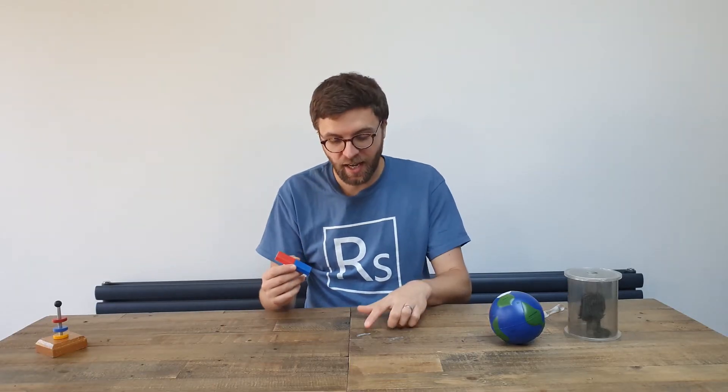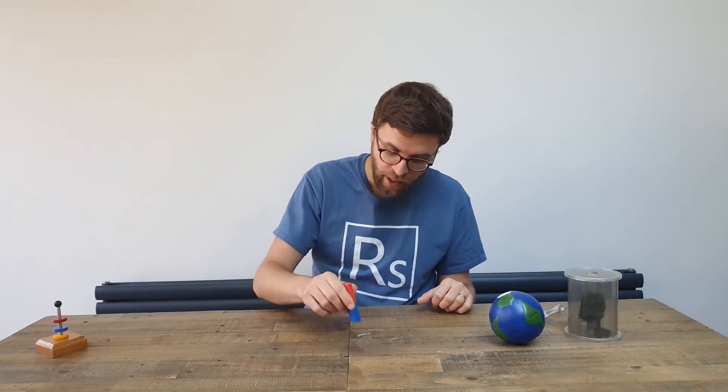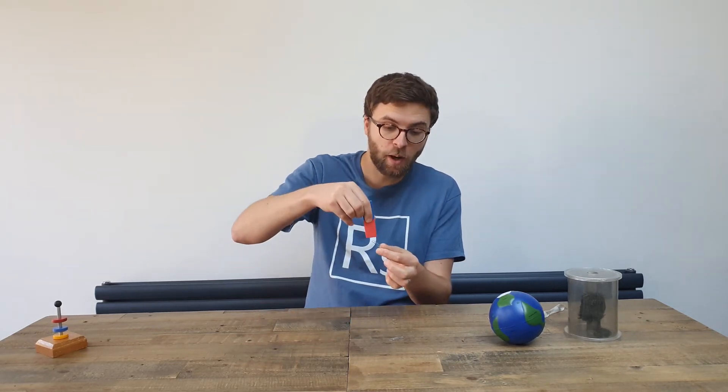The force between a magnet and a magnetic material like this paperclip is always one of attraction, regardless of which pole I'm using.